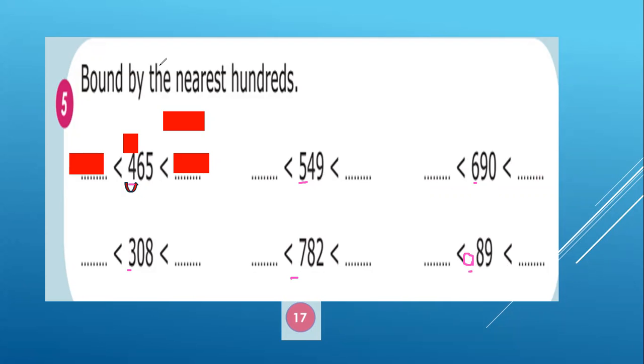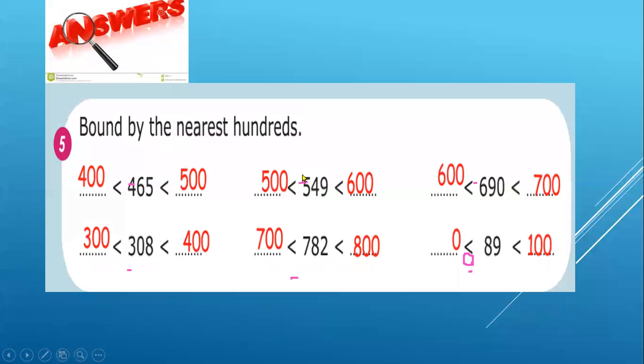Now look at this. 400. So 465, it's between 400. Then I will add one on the hundred digit. So 400 plus 100, it will be 500. Same here. 500. 500. 600.